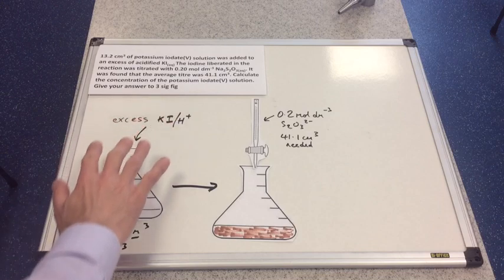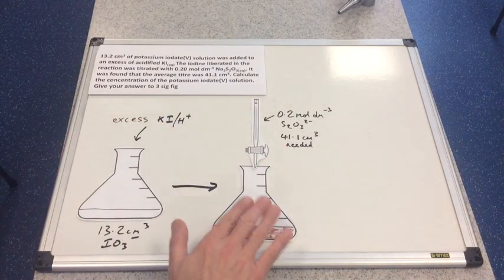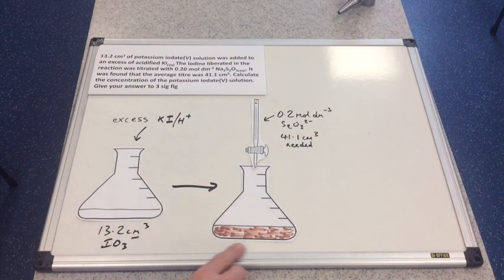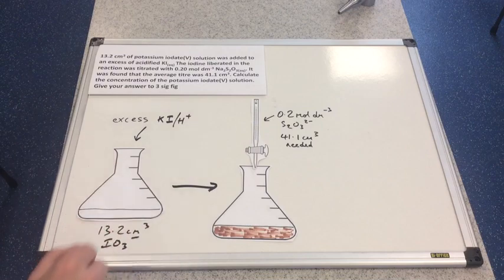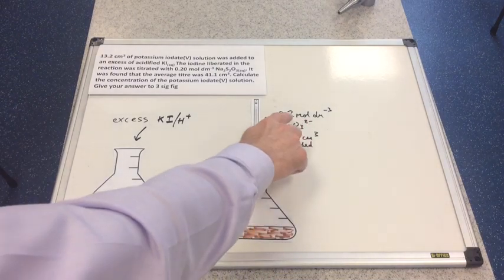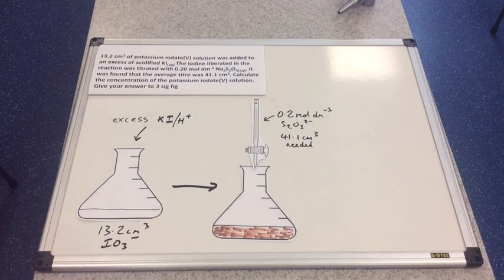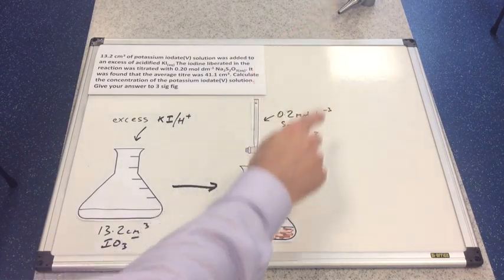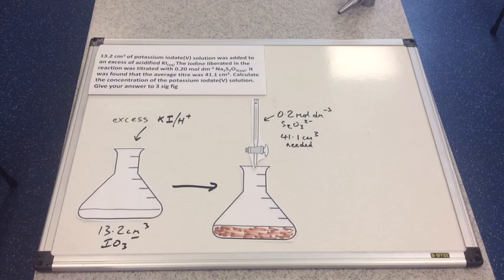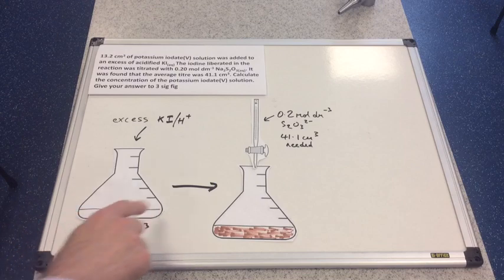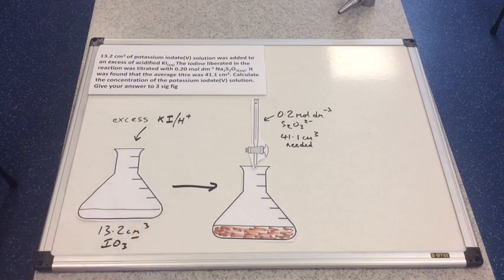The reaction produces a brown solution, indicating the iodine formed. Then the titration takes place. We're told that 0.2 mol dm⁻³ sodium thiosulfate solution is used and the average titre is 41.1 cm³. We have to calculate the concentration of the original potassium iodate(V) solution.